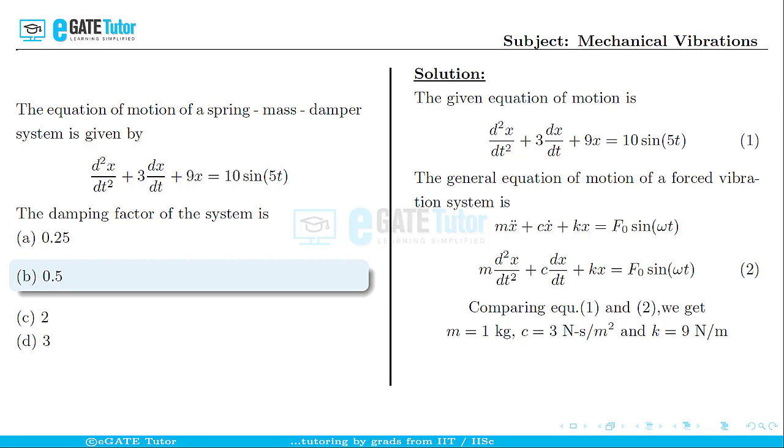So we have the values of m, c and k. Now we can write the damping factor ζ as c/cᴄ, where c is the damping coefficient and cᴄ is the critical damping coefficient.